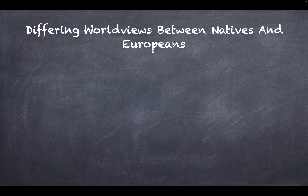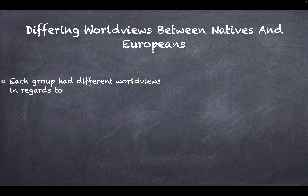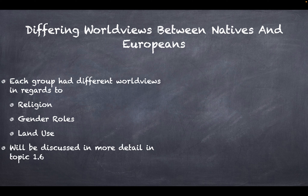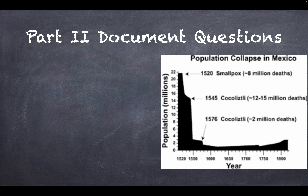Differing worldviews between Natives and Europeans is another key topic. Each group had different worldviews regarding religion, gender roles, and land use. This will be discussed in more detail in Topic 1.6 and helps explain the conflict that arose between colonists and Native Americans.